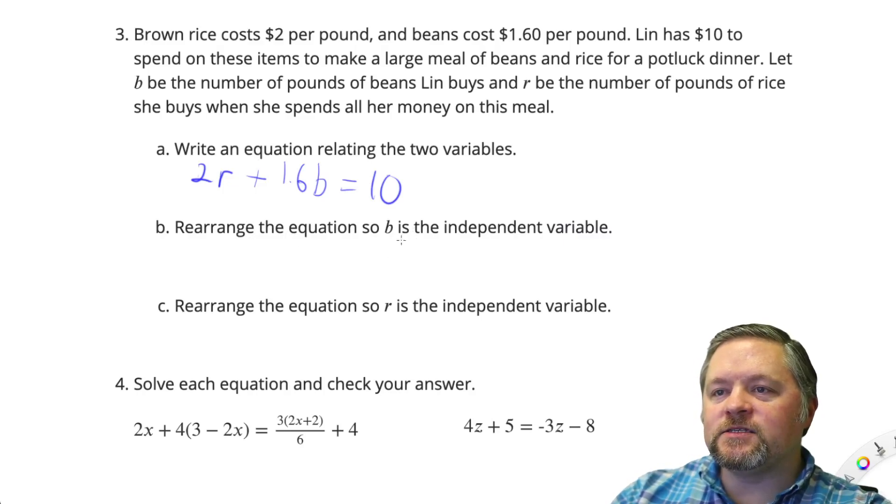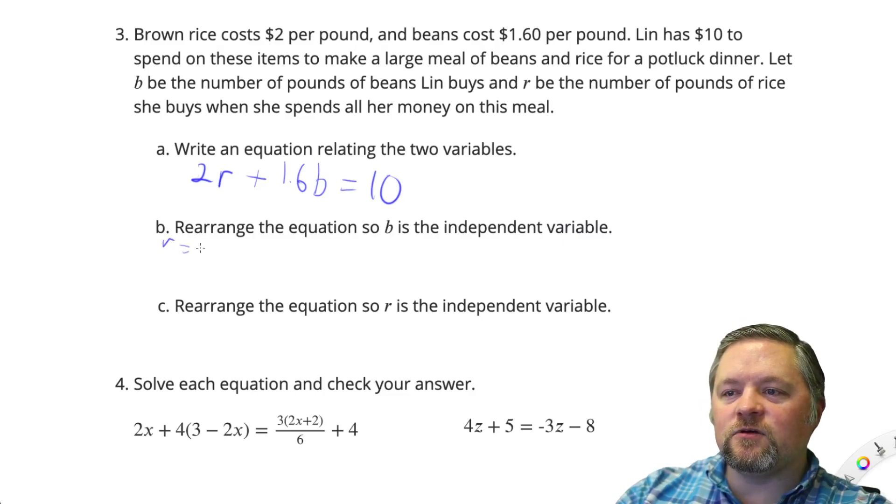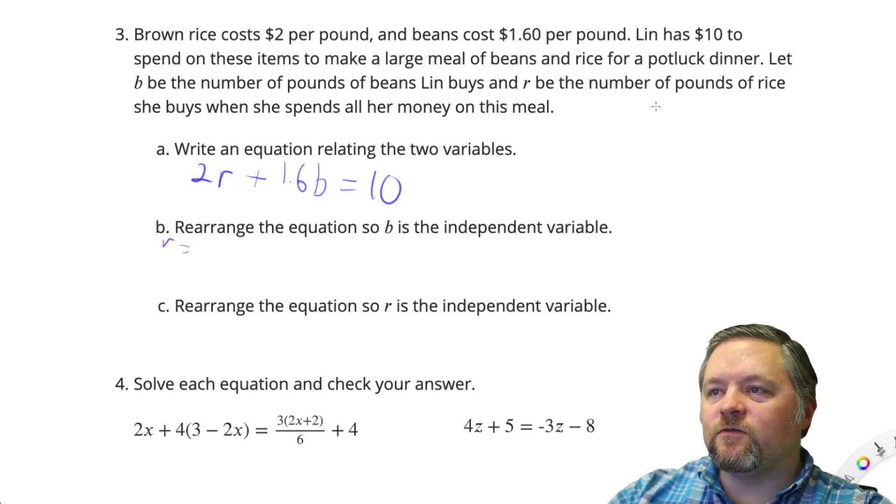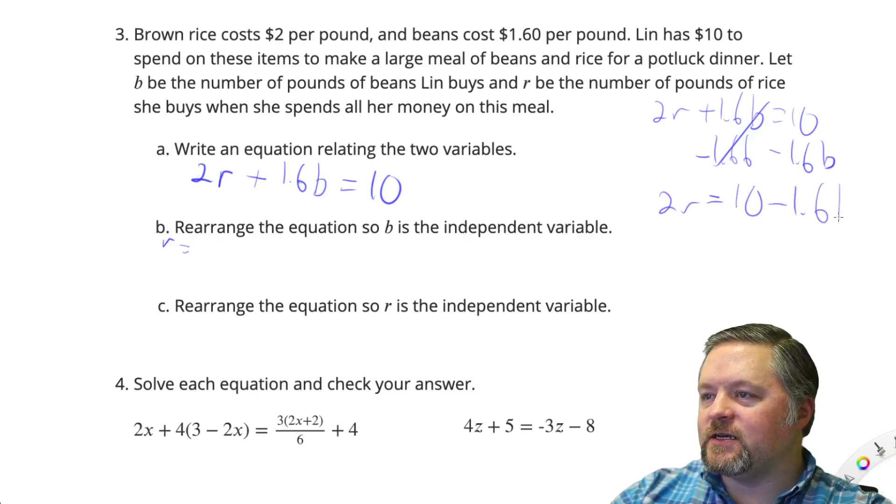Rearrange the equation so that B is the independent variable. So if we want B to be the independent variable, we want R to depend on B. So we want this to look like R equals something. So if we have 2R plus 1.6B equals 10, if we want the R by itself, we've got to get rid of the B. So I'm going to subtract 1.6B from each side. Those will cancel, and 2R equals 10 minus 1.6B. Now, to really get the R by itself, we have to divide each side by 2. So R equals 5 minus 0.8B.